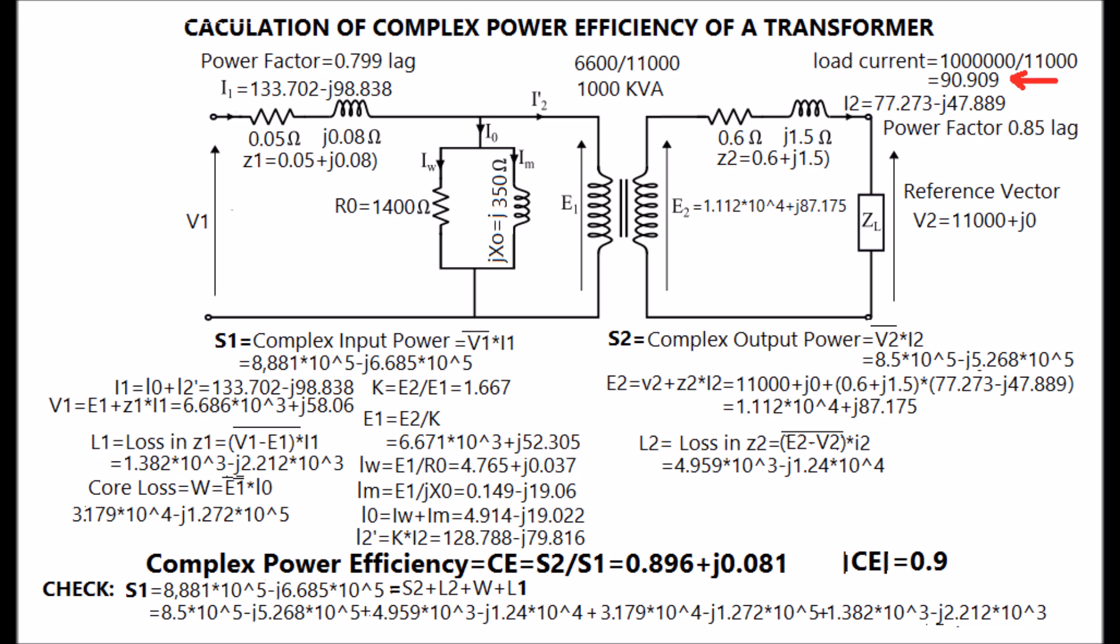Transformer is working with full load current of 90.909 amperes and 0.85 lagging. Complex value of I2 is also given in the diagram.